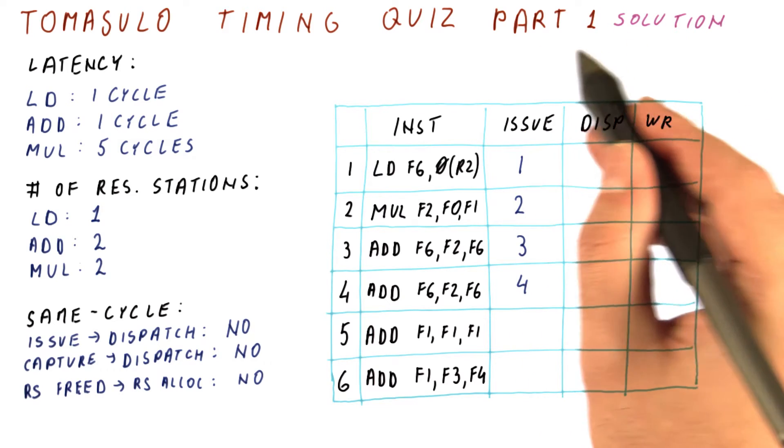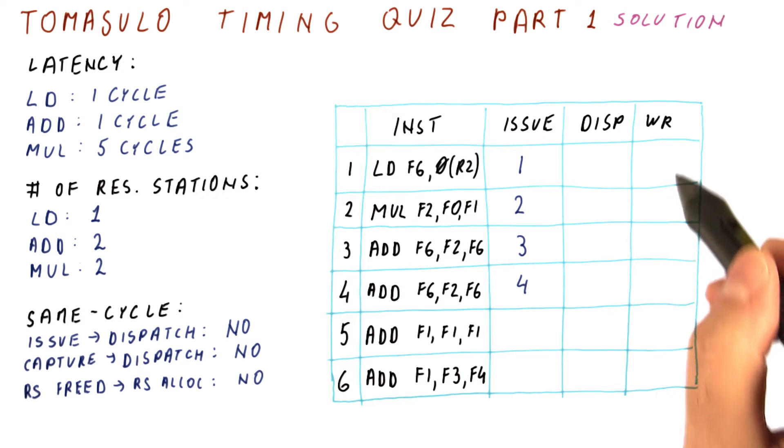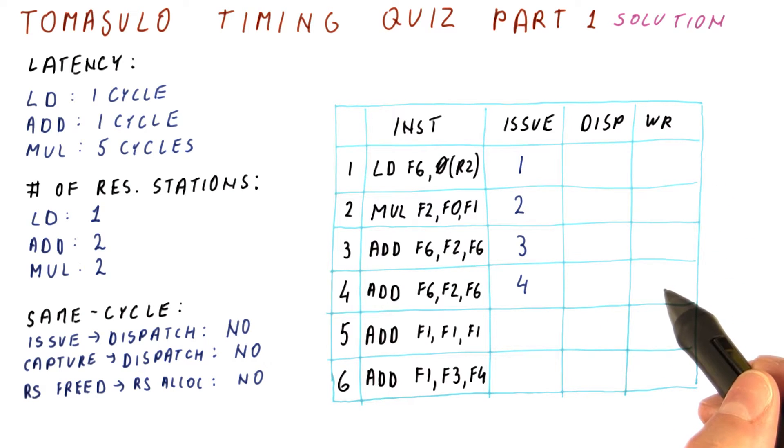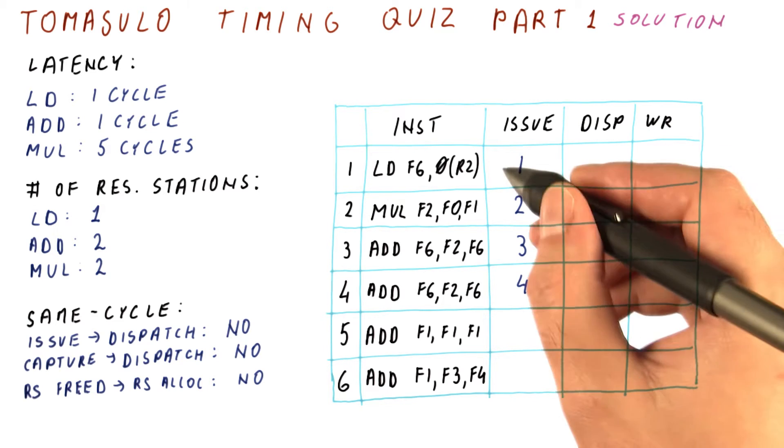Let's now look at the solution for part one of this quiz, which is asking when do these four instructions dispatch and write the results. We will do that one instruction at a time.